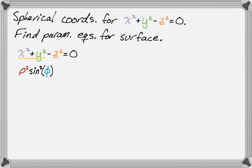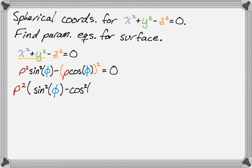All right, let's keep going. So z, I'm just going to replace this with rho cosine phi and then square it. And then the whole thing equals zero. So from here, I'm going to expand and I'm going to factor rho squared out of everything.